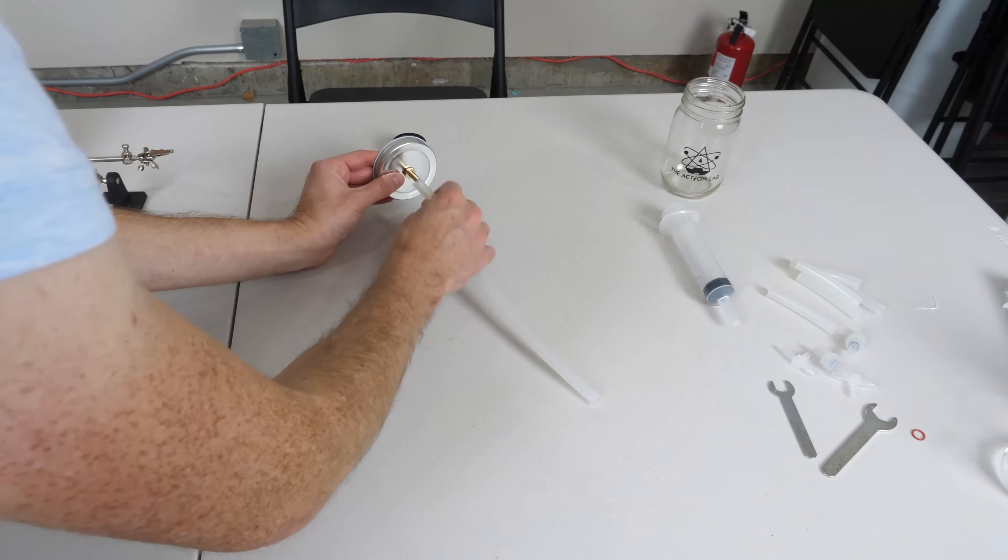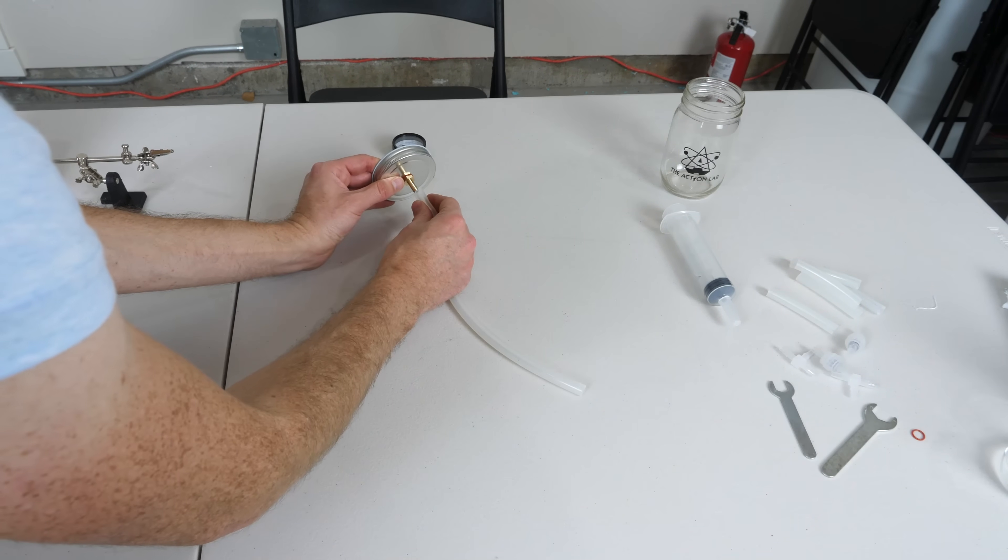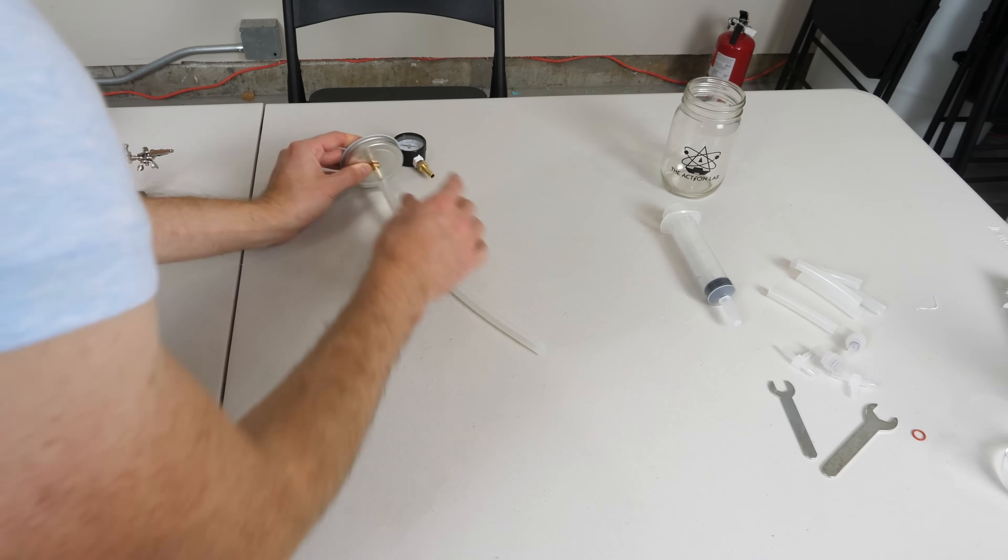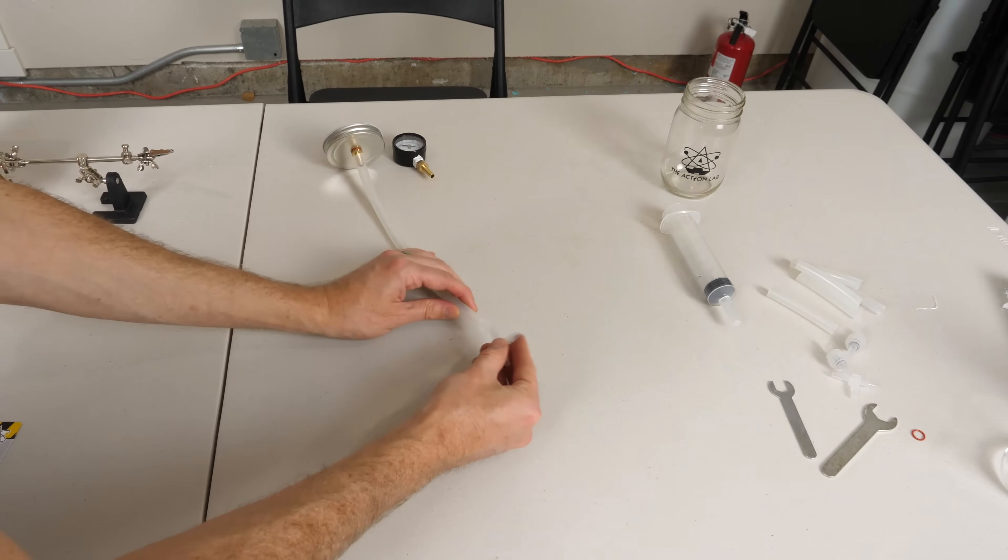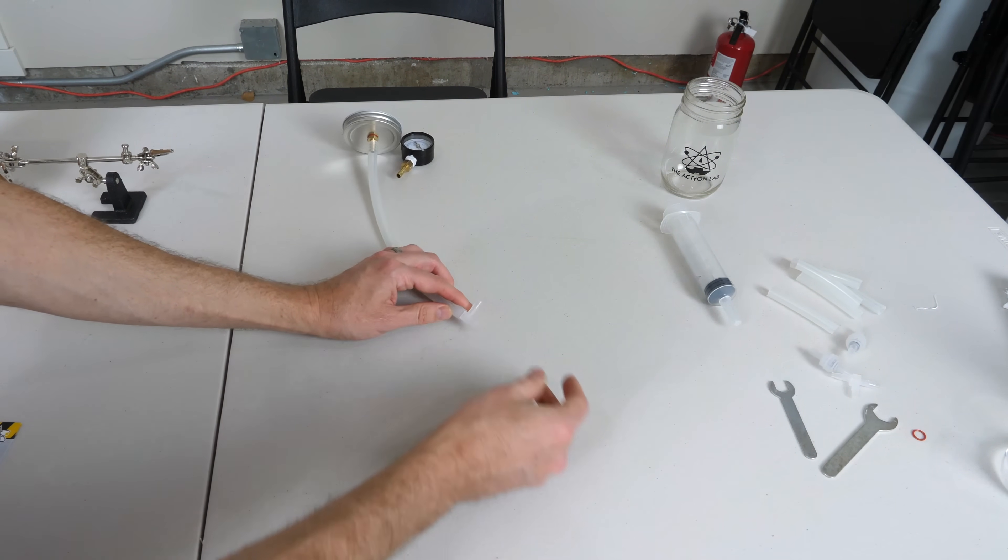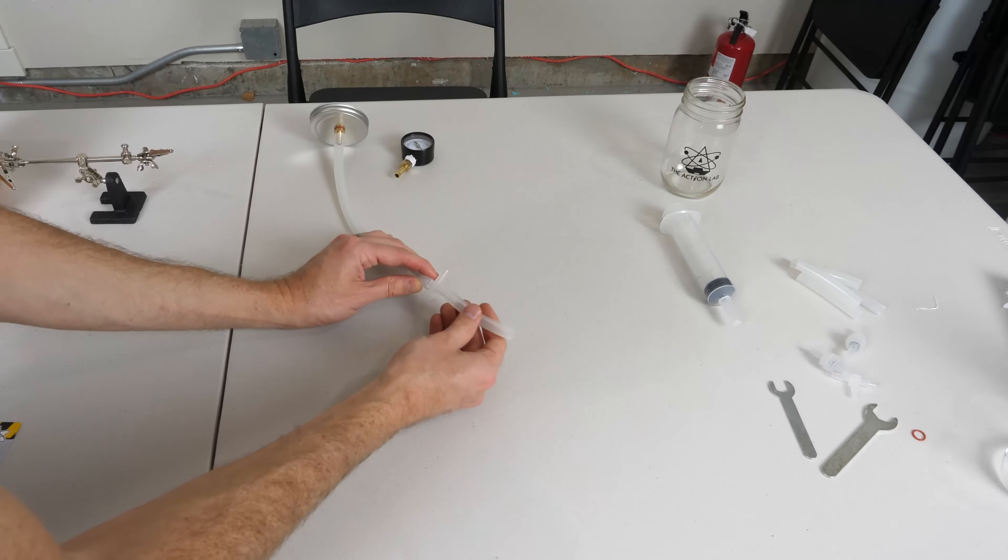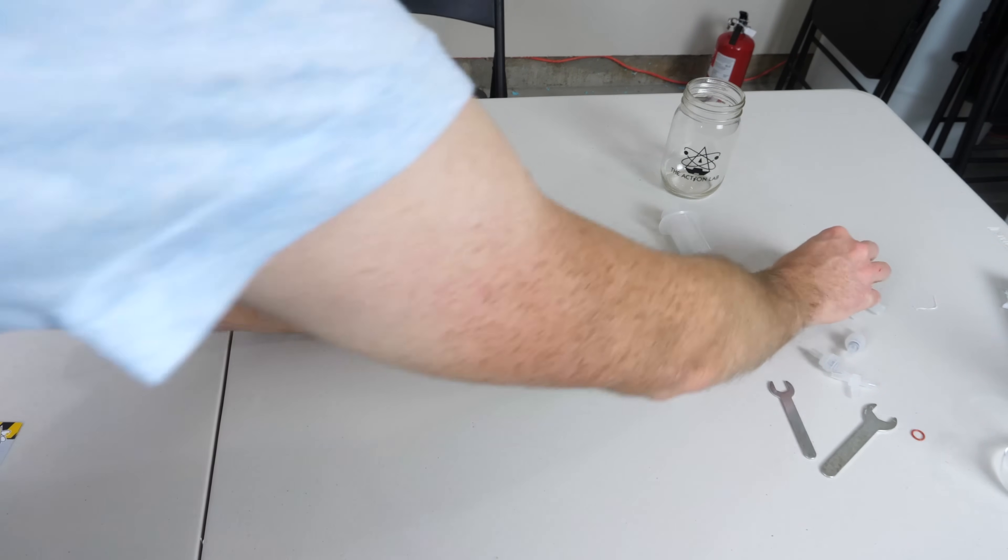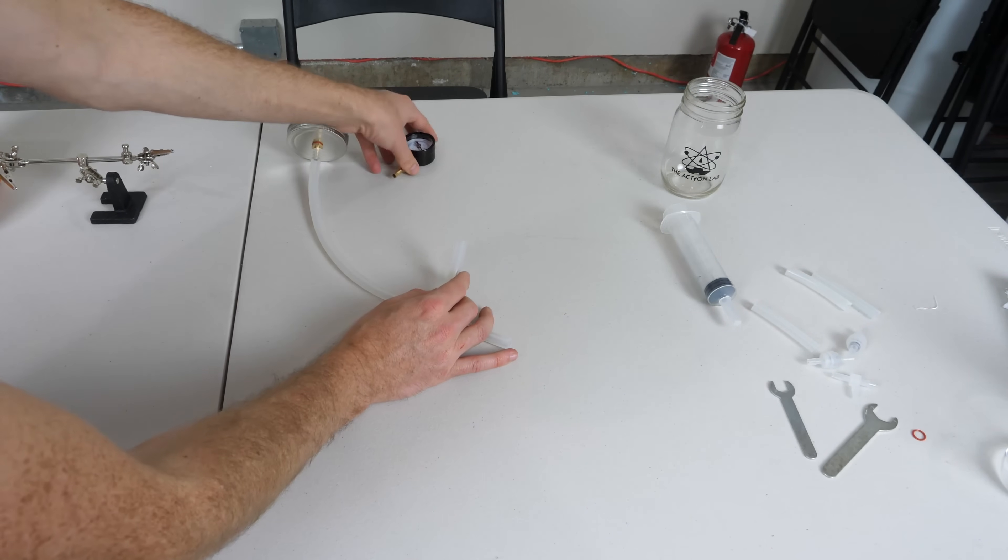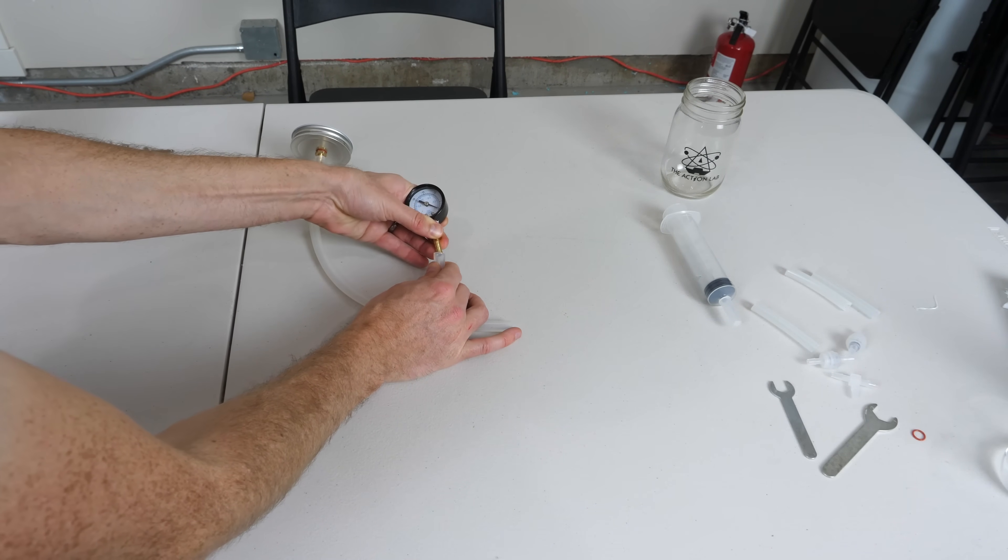And now you can assemble your whole hose assembly. Take the long hose and put it on here. Then take your three-way splitter, plug it in here. Take another short hose, put it here. Another one on top here. You can plug in your vacuum gauge now.